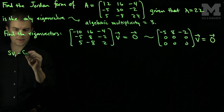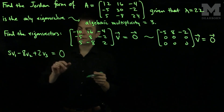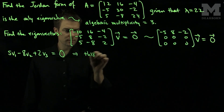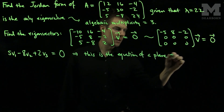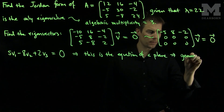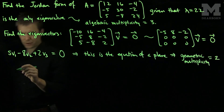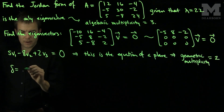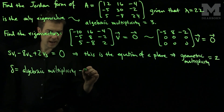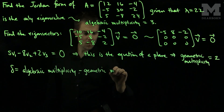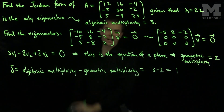So V must satisfy: 5V1 minus 8V2 plus 2V3 equals zero. This is a plane, which implies the geometric multiplicity is equal to 2. The deficiency of this eigenvalue is the difference between algebraic and geometric multiplicity, which is 3 minus 2, so the deficiency equals 1.